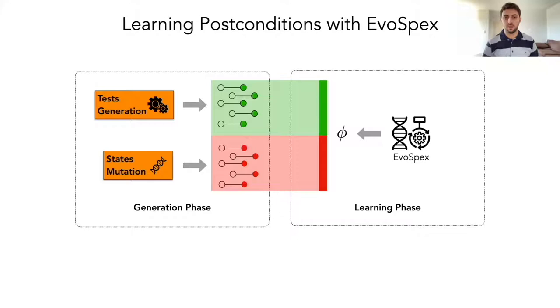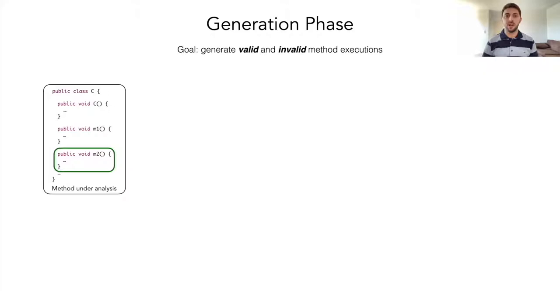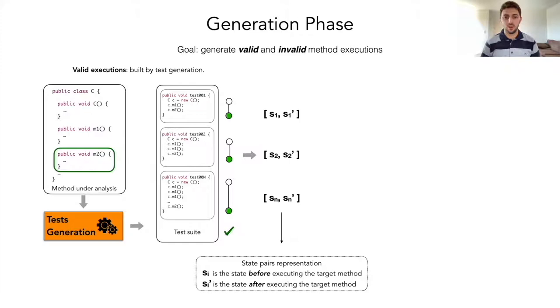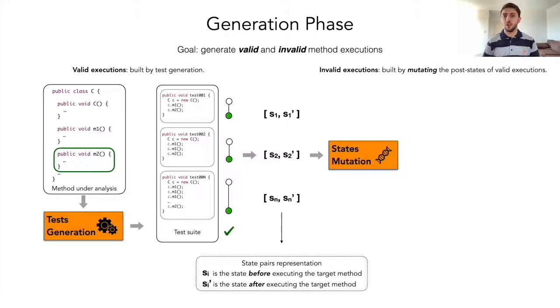The generation phase has as a goal generating valid and invalid method executions. We take the method under analysis and use a test generation technique that provides us with a test suite from which we take the valid executions. More precisely, these executions are represented as state pairs, where the first component represents the state before executing the target method, and the second component represents the state after executing the target method. From there, we use a state mutation technique that allows us to build the invalid executions by mutating the post-states of valid executions.